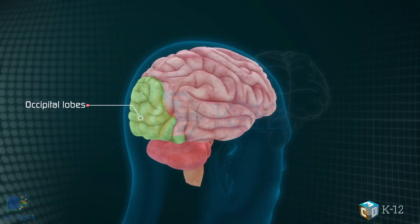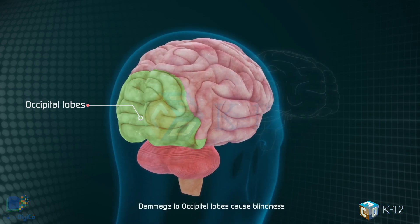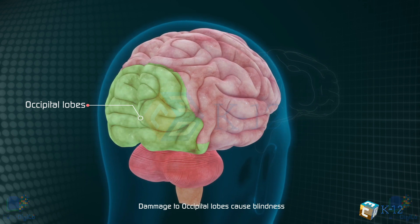The occipital lobes process images from the eyes and link that information with images stored in memory. Damage to the occipital lobes can cause blindness.